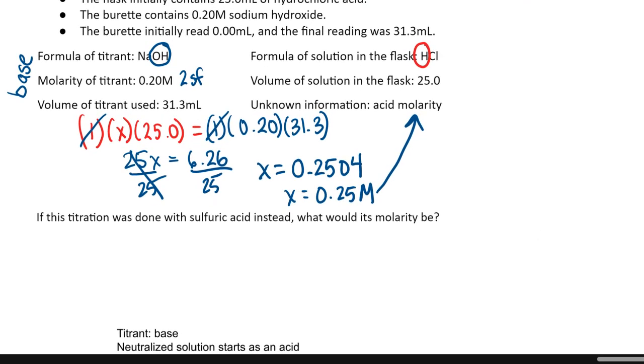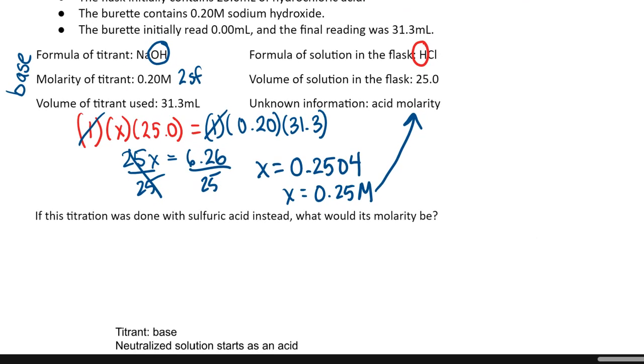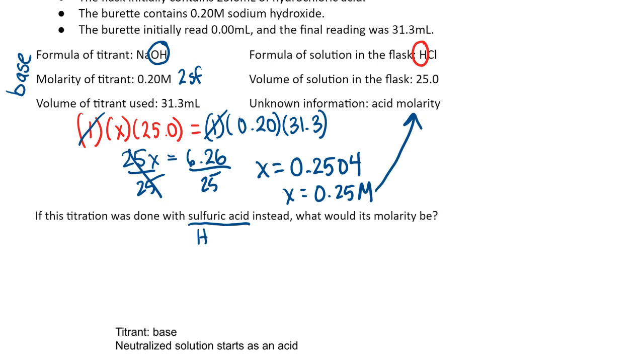Now I want to change this a little bit. I want to say, well, what if I changed it and I used sulfuric acid instead? How is that different? Sulfuric acid still going to start with an H. Sulfuric means that it was with the sulfate ion, so this is H2SO4. What that changes is this. Now that acid contributed two hydrogens to the neutralization reaction, so what that changes is instead of a one I'm going to put a two.